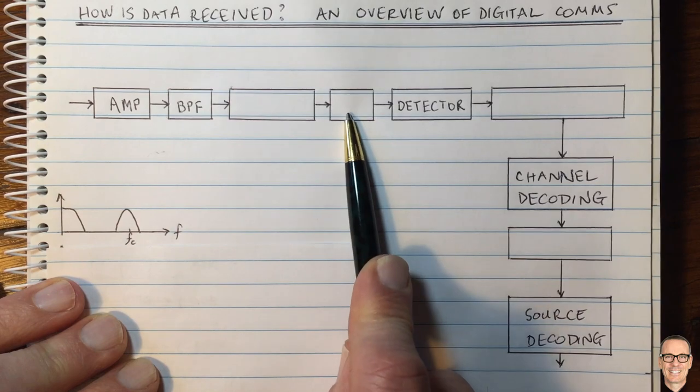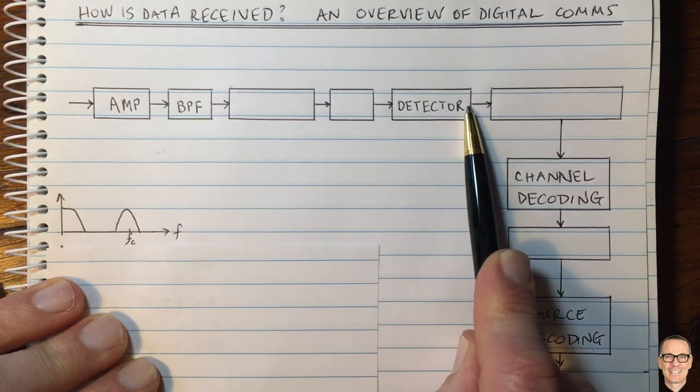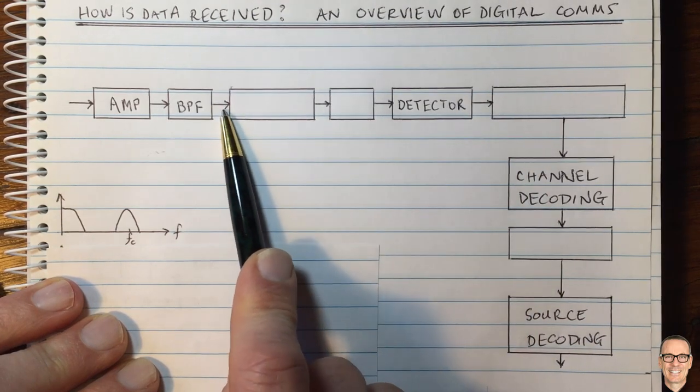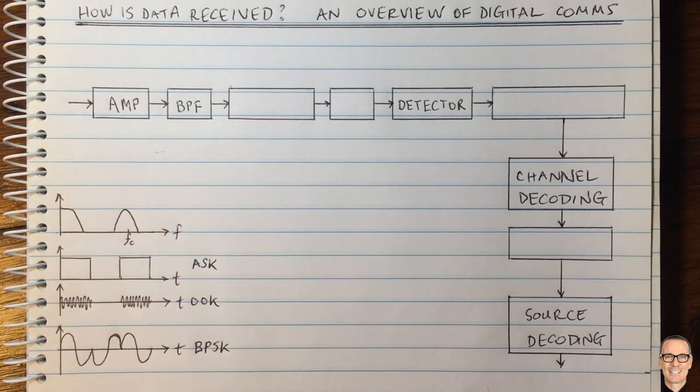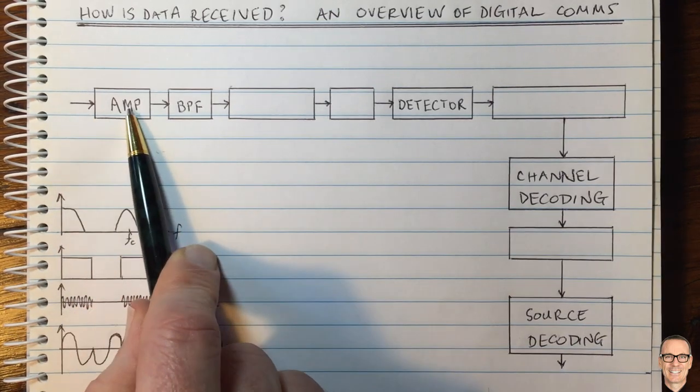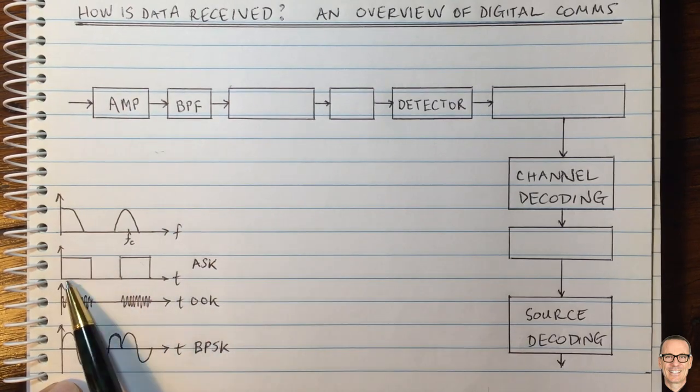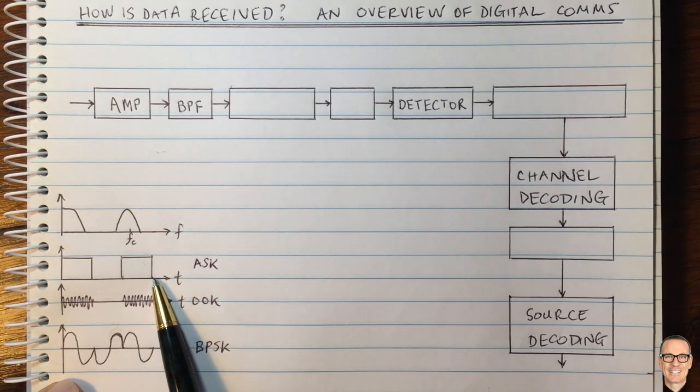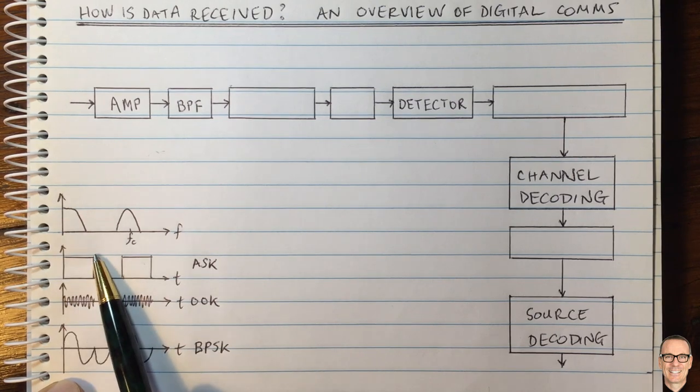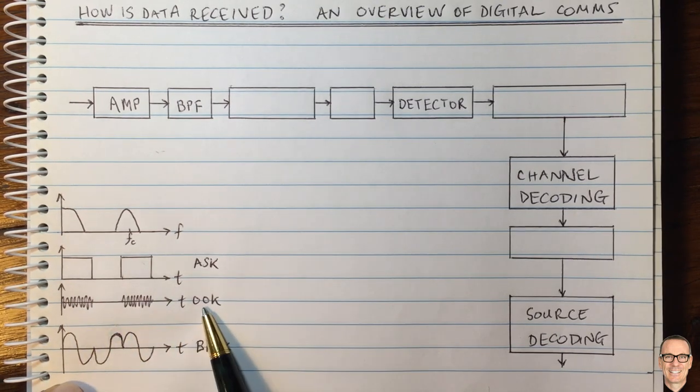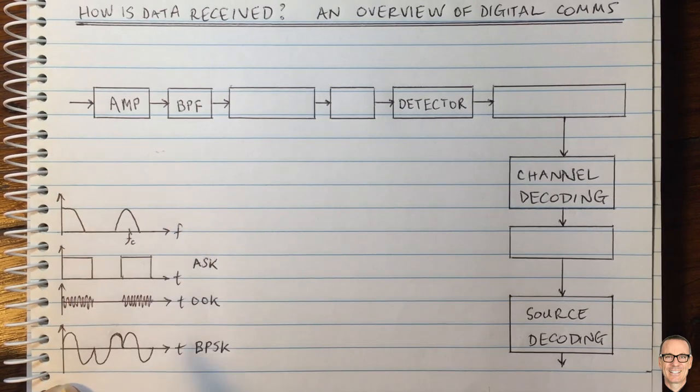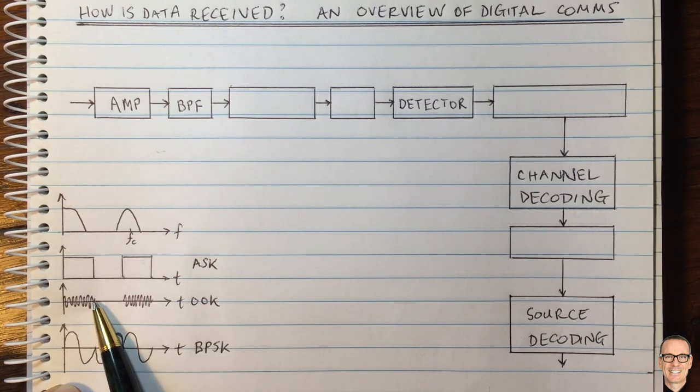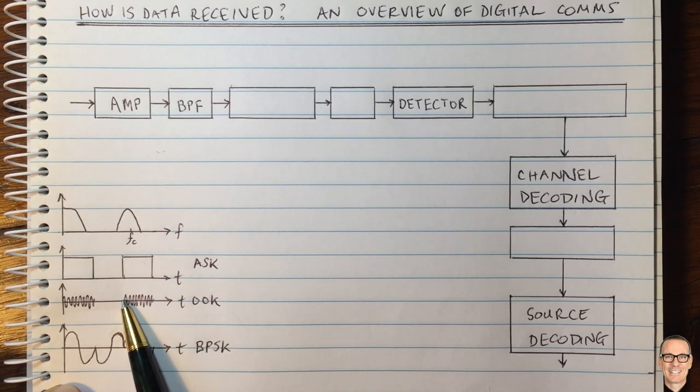What about the two boxes here between the bandpass filter and our detector where we're detecting back the zeros and ones? Let's remind ourselves of the three most basic types of signals for transmitting digital data. One is amplitude shift keying (ASK), where you're changing between two different amplitude levels. If it was optical fiber, you might have used on-off keying (OOK), where you're sending light when doing a digital one and not sending anything for a digital zero.